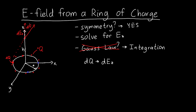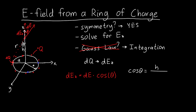How do we get dEz from dE? We can use trigonometry. If we call this angle theta, then dEz is just dE — the magnitude of the electric field due to my tiny piece of charge — times cosine of theta. We can figure out cosine of theta because we know this distance is h, this distance I'll call r, and this distance a. So cosine theta equals the adjacent side h divided by the hypotenuse r, or using the Pythagorean theorem, divided by the square root of a squared plus h squared.